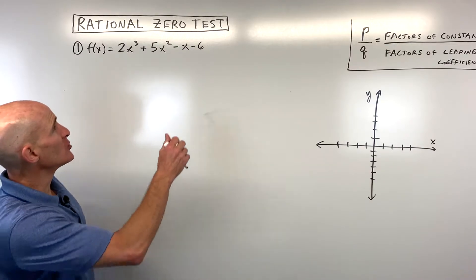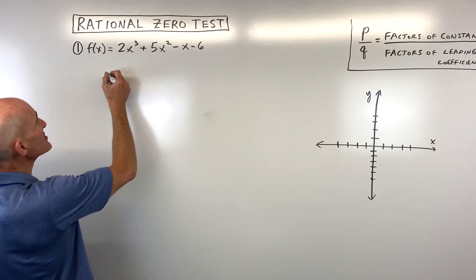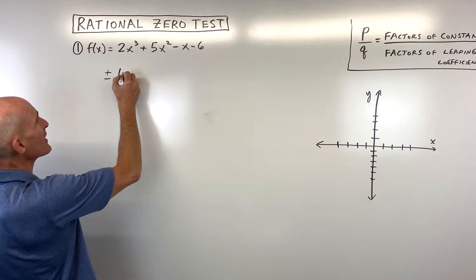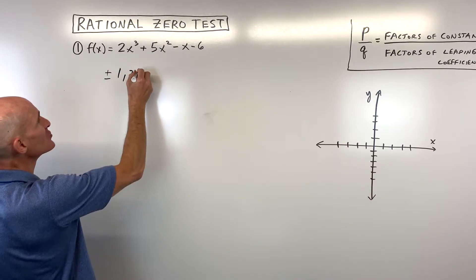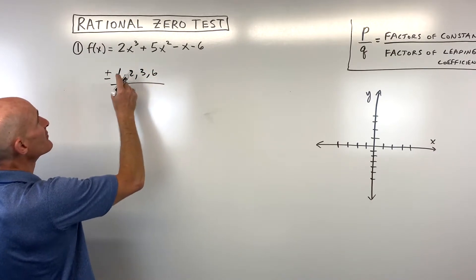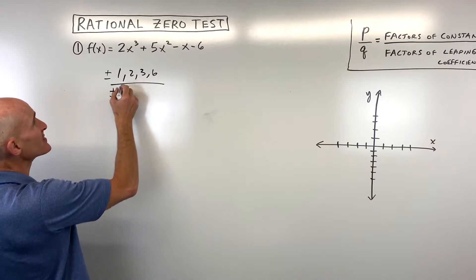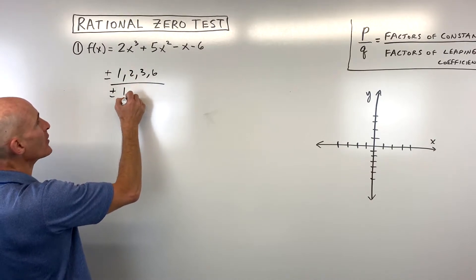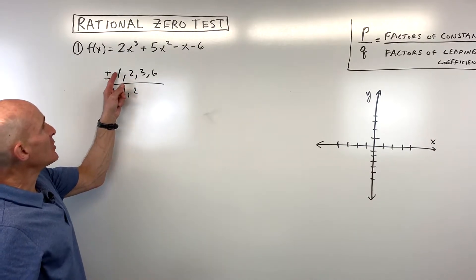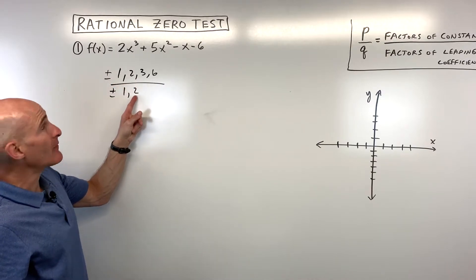What you do is you think about all the numbers that go into 6 — that would be plus or minus 1, 2, 3, 6 — divided by all the factors of the leading coefficient. In this case, it would be 1 or 2.